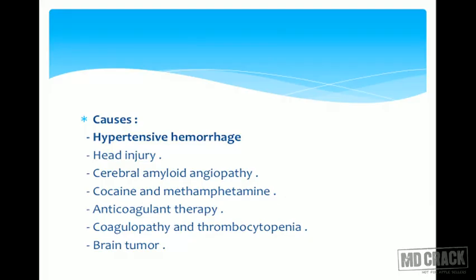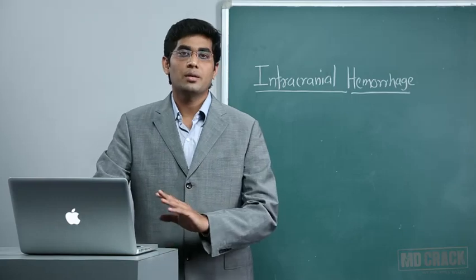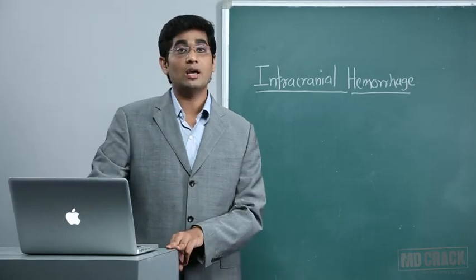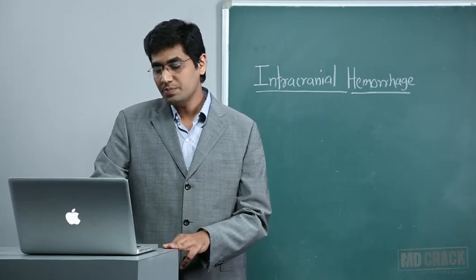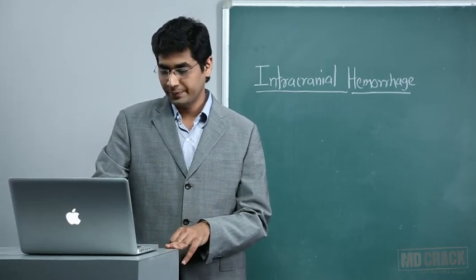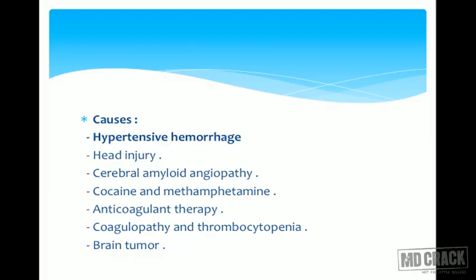Regarding coagulopathy and thrombocytopenia, many diseases can present with these conditions and may cause intracranial bleed. Brain tumor is another cause — some patients complain of headache starting from six months prior and may neglect it. Hemorrhage into that tumor can cause the patient to present directly with stroke, so brain tumor itself can be a cause of hemorrhage.